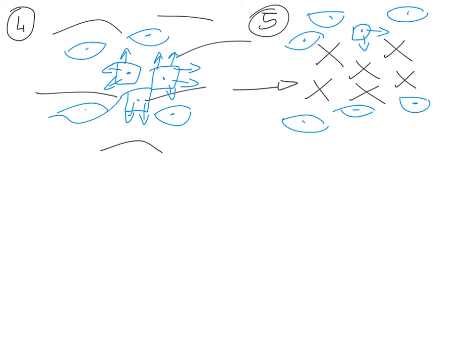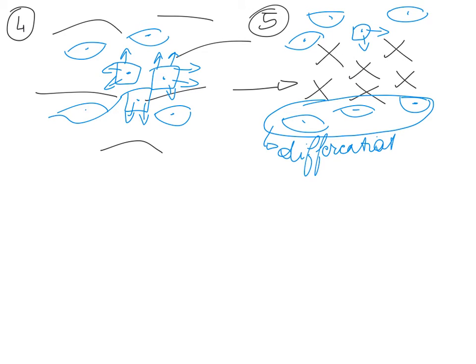The mesenchyme cells that are sitting closer to the periphery are actually going to turn into periosteum — they differentiate into periosteum. Is this really possible? Well, mesenchyme cells can give rise to any connective tissue. Periosteum is made up of a bunch of collagen fibers in the fibrous layer and an osteogenic layer, which is a bunch of osteoblasts, osteoclasts, and osteoprogenitor cells, which again arise from mesenchyme cells.